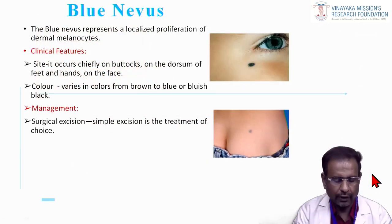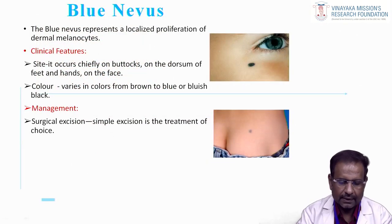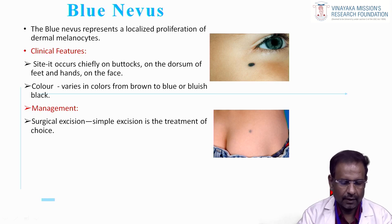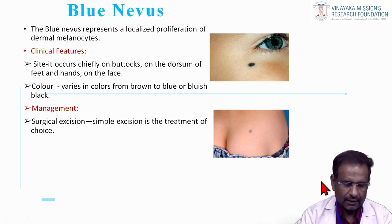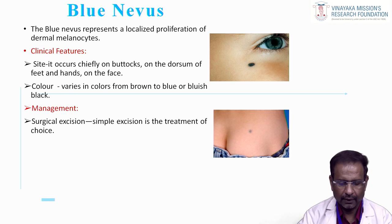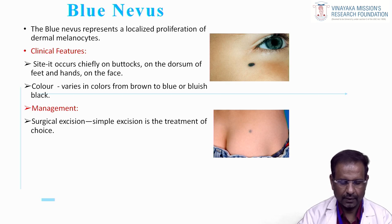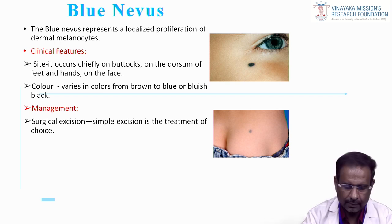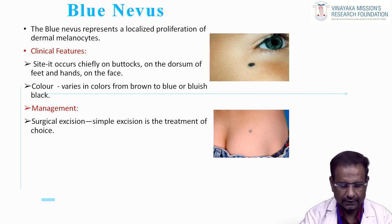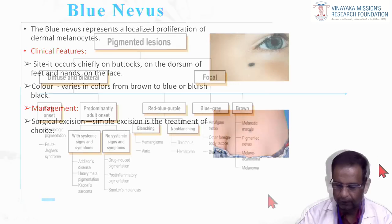Blue nevus represents a localized proliferation of dermal melanocytes. It occurs chiefly on the buttocks, dorsum of the feet and hands, and the face. Color varies from brown to bluish. Management is surgical excision, which is the simplest method.